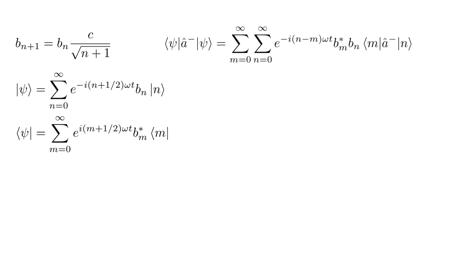Then the expectation value of the destruction operator is the sum over m, the sum over n, of e to the minus i(n - m)ω t, times b_m conjugate, b_n, times Bra m, â minus ket n. One thing to notice is that the one-half terms in the complex exponential factors have cancelled out.